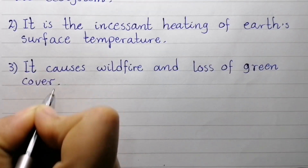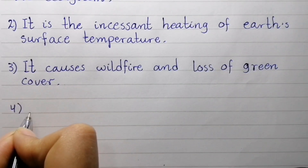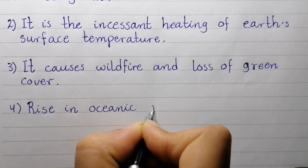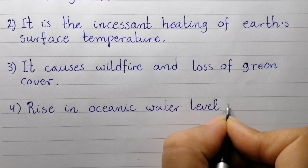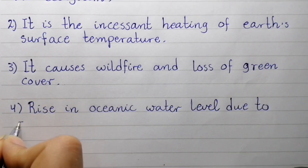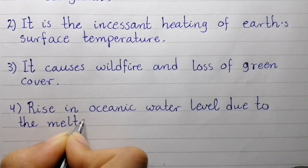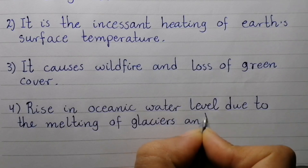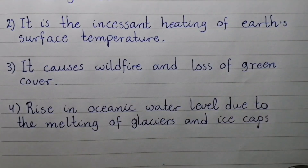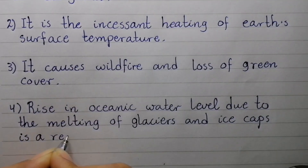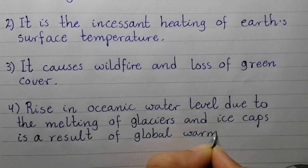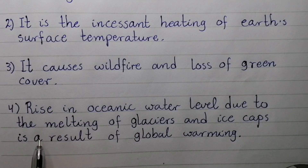Point number four: Rise in oceanic water level due to the melting of glaciers and ice caps is a result of global warming.